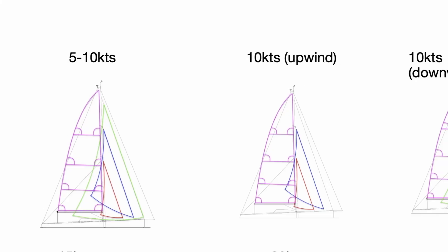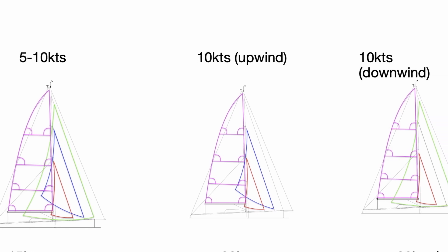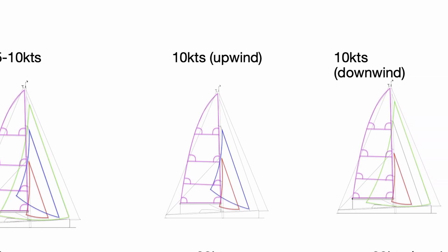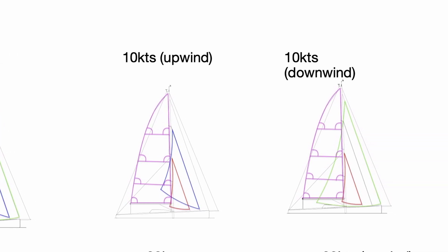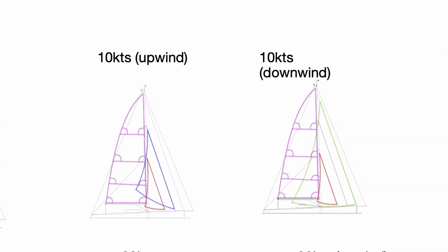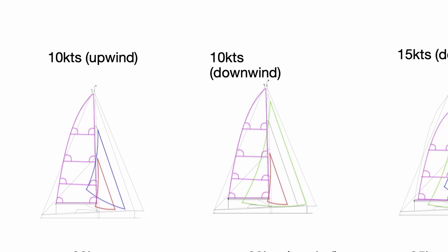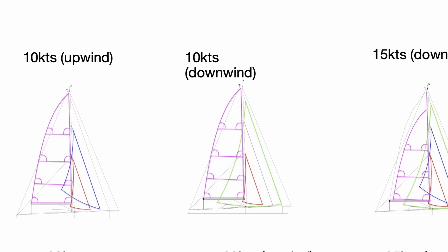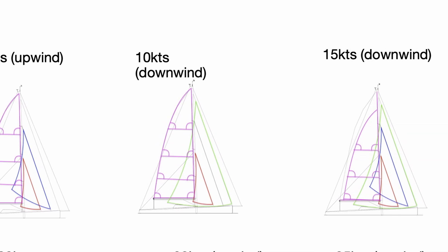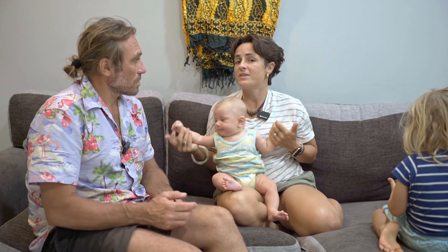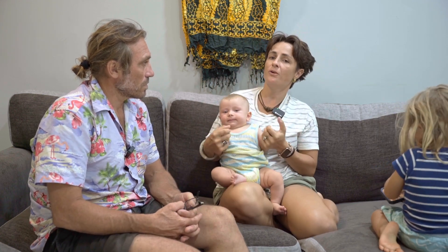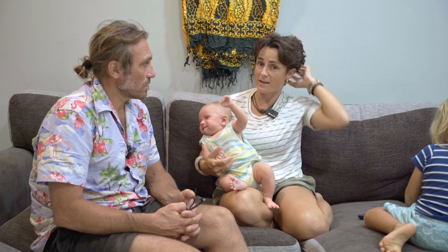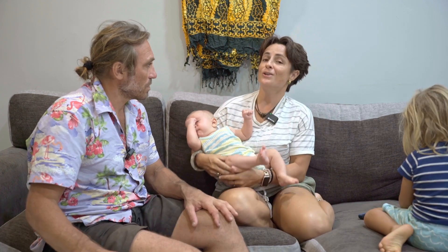Another nice thing about having three forestays is that in light winds, depending on the wind angle, we can potentially use all three headsails. As the wind increases we can reduce them across seven different configurations — each sail on its own, all three together, and all three combinations of pairs.